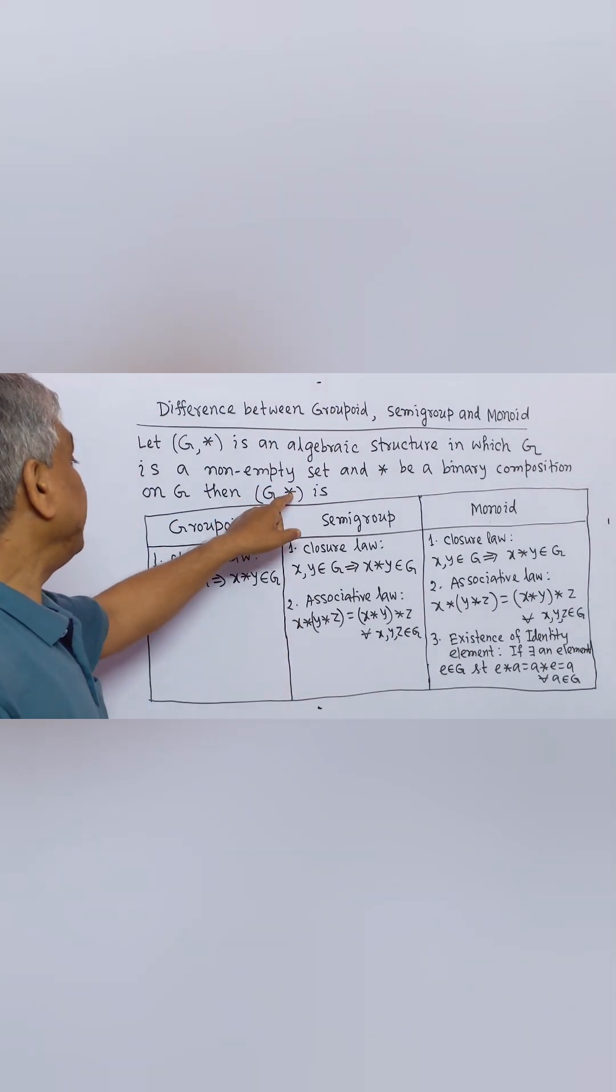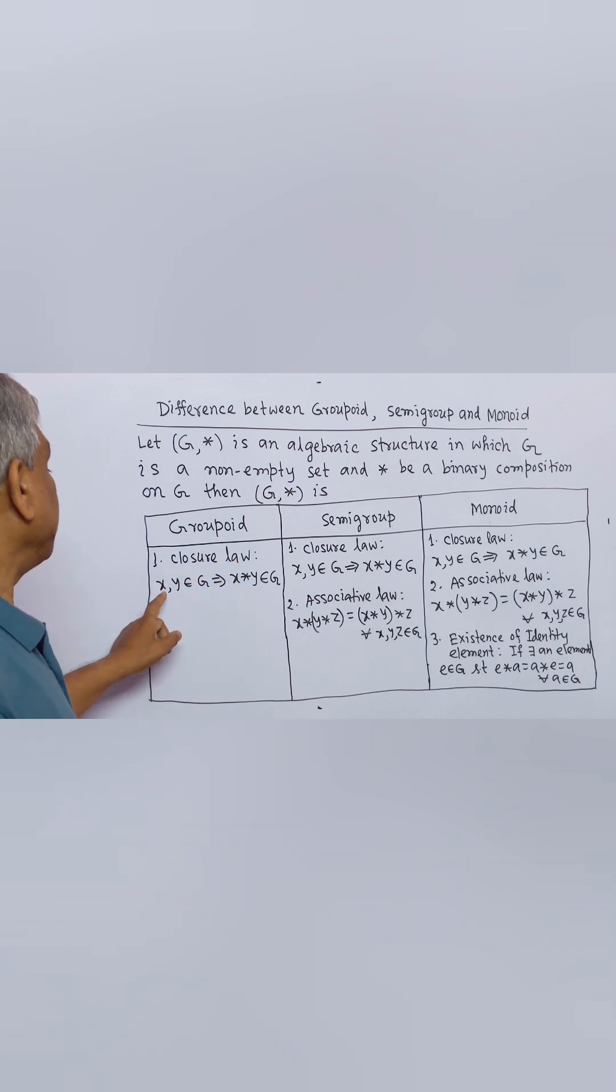Then G with binary composition is a groupoid if it fulfills closure law. That means X, Y belong to G implies that X binary composition Y belong to G.